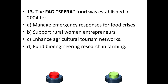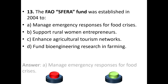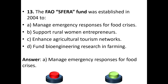Question 13: The FAO SFPRA Fund, established in 2004, was created to: a) manage emergency responses for food crises, b) support rural women entrepreneurs, c) enhance agricultural tourism networks, or d) fund bioengineering research in farming. The answer is option A — manage emergency responses for food crises.